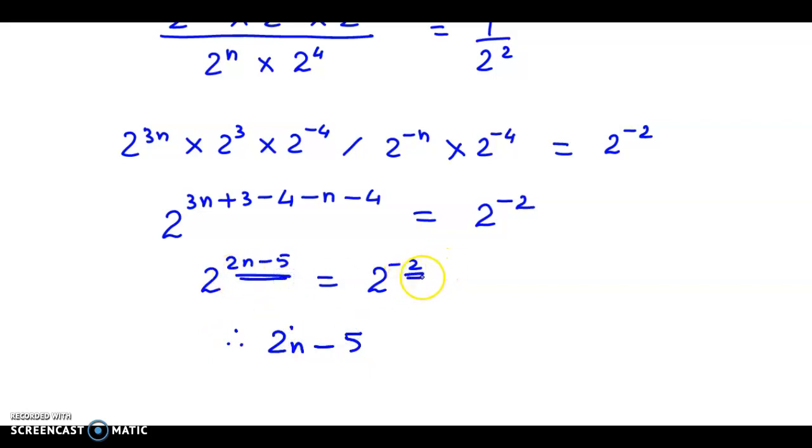Now we simplify this further. So here I have got 2n equals minus 2 plus 5. So 2n equals 3. Therefore n equals 3 by 2.